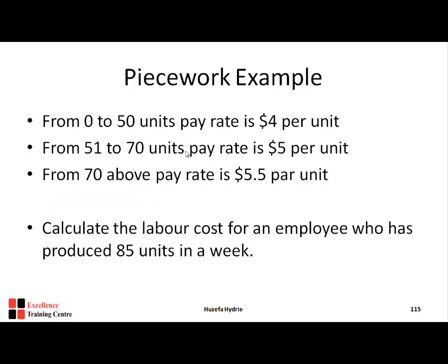Let's look at a piecework example — specifically differential piecework. Calculate the labor cost for an employee who has produced 85 units in a week, given the following rates: 0–50 units at $4 per unit, 51–70 units at $5 per unit, and 71 and above at $5.50 per unit. Note: if some units are rejected, you pay only for the accepted good units, not the rejected ones.